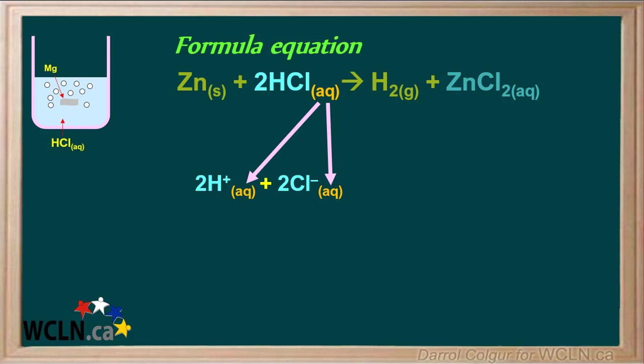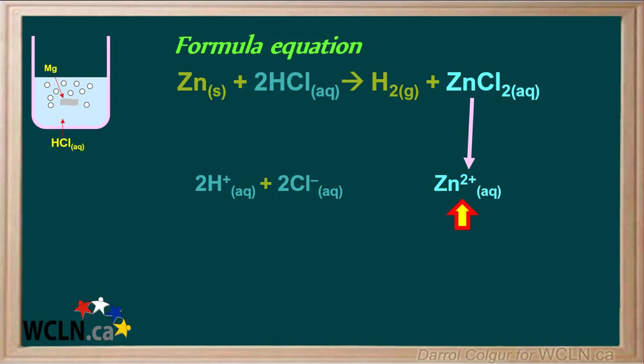Also, because HCl is aqueous, both of its ions are aqueous. The other aqueous compound is ZnCl₂ on the right side of the equation. Because it's a soluble aqueous compound, we can also dissociate it into its separate ions. The zinc cation has a charge of 2+, and the chloride anion has a charge of −1.